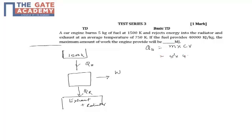We have 5 kg. So, we have 5 kg and we get 40,000 KJ.